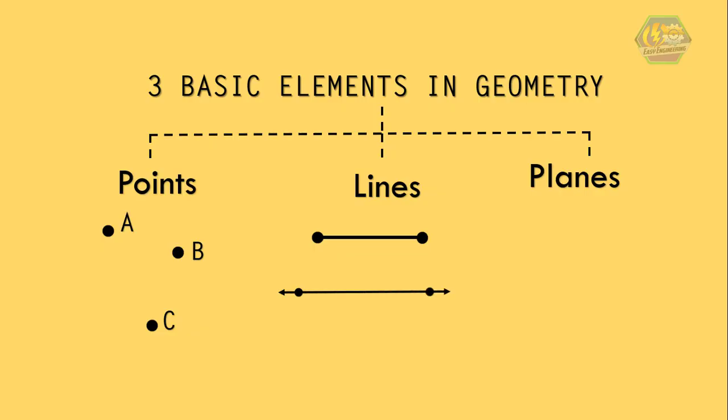And lastly is the plane. A plane has no thickness and extends in all directions without an end, and it is also composed of three points that are not on the same line.